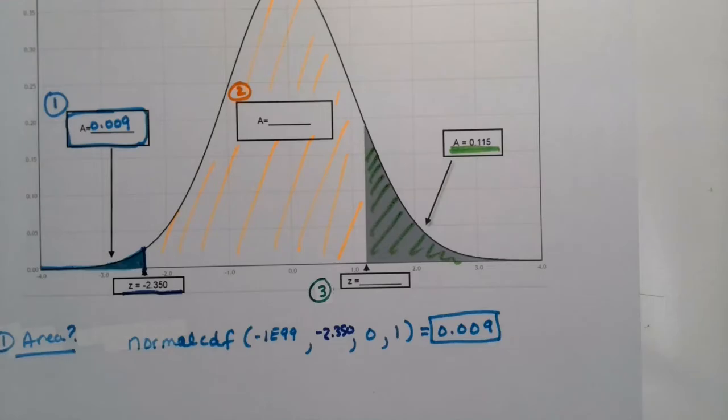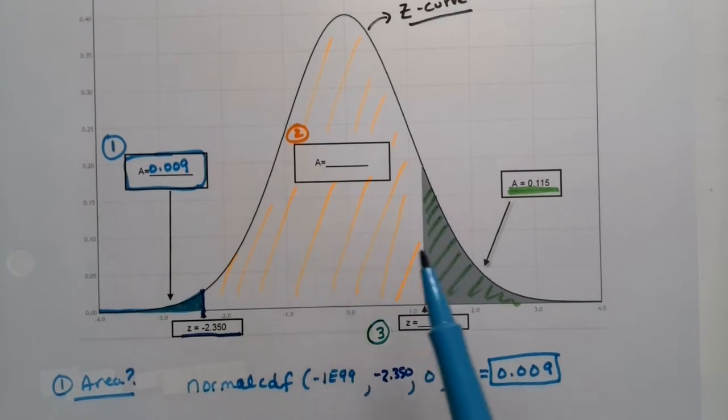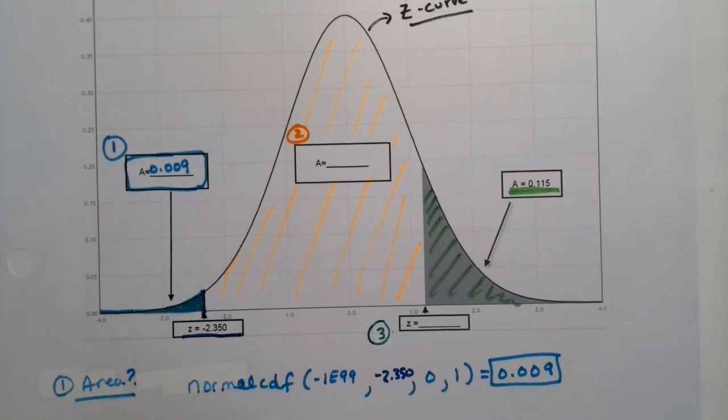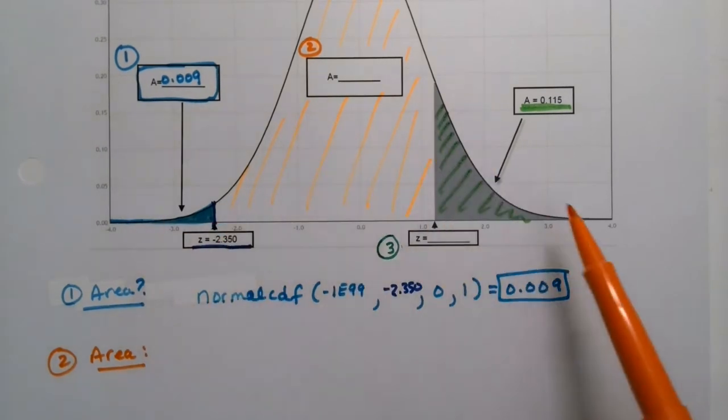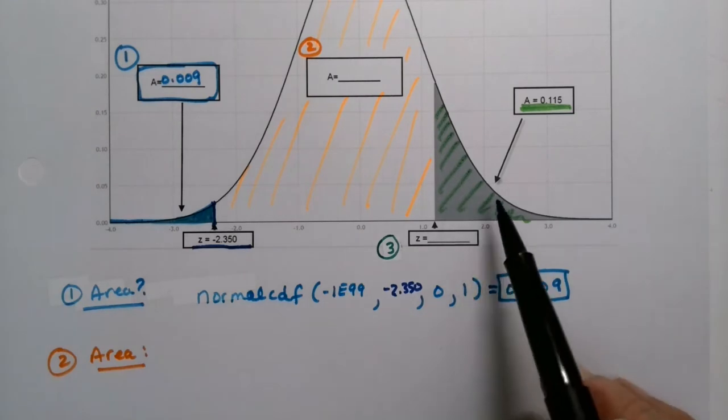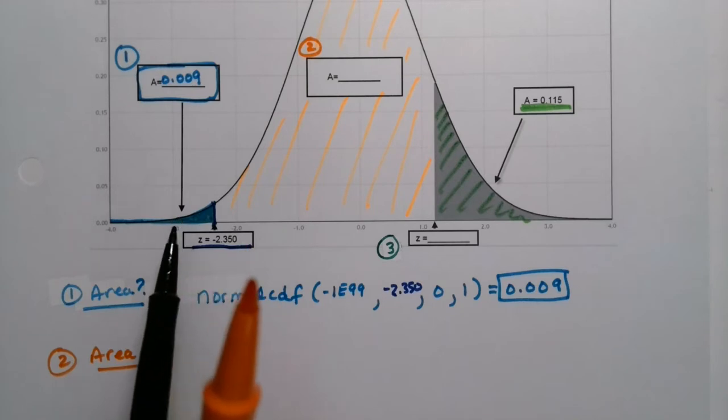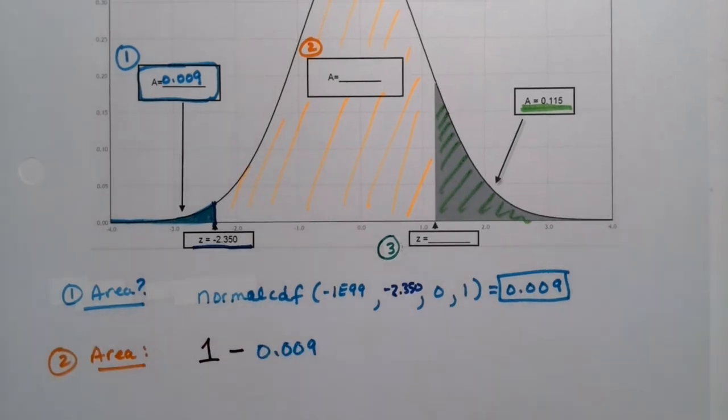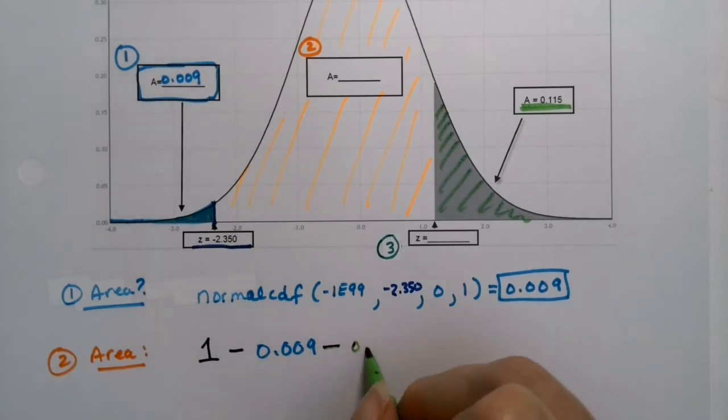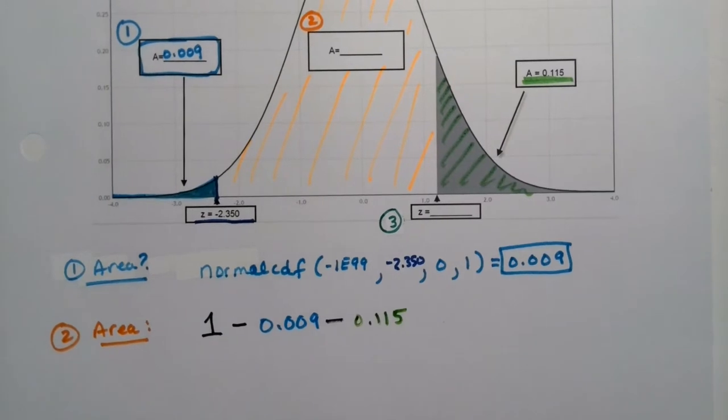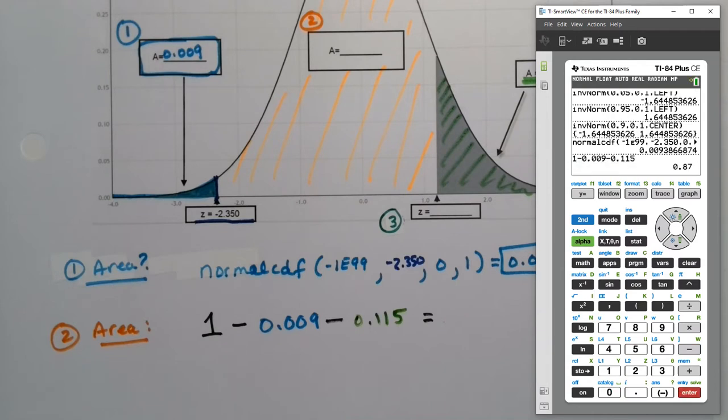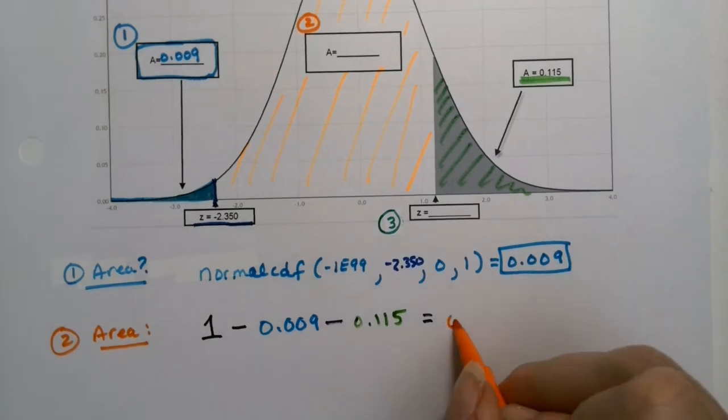Now at this point we actually have a choice. We can find either the middle or the far right side, but I think the middle will be easiest. The area in the middle is actually simpler than the other two. The area under any normal curve is 1. But I already know the area of this green bit is 0.115 and this blue bit I just found is 0.009. So the area would be 1 take away 0.009 and also take away 0.115.